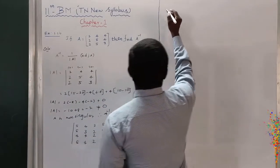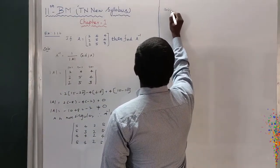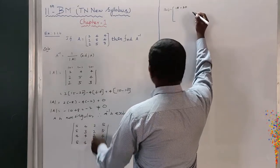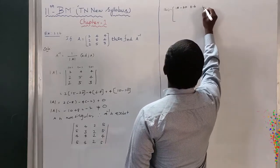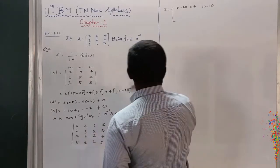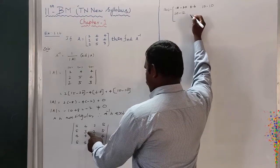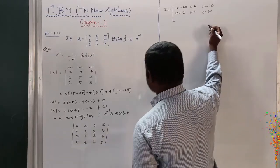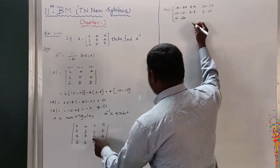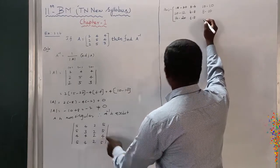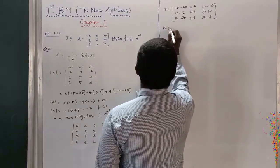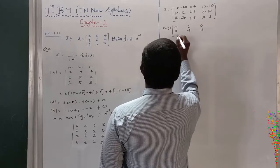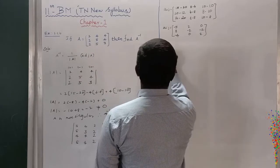So A_ij equals: first row — (15 minus 20), (8 minus 6) wait (6 minus 8), (10 minus 10); second row — (20 minus 12) wait (12 minus 20), (6 minus 8), (8 minus 10); third row — (16 minus 20), (8 minus 8), (10 minus 8). Therefore A_ij equals [minus 5, 2, 0; 8, minus 2, minus 2; minus 4, 0, 2].